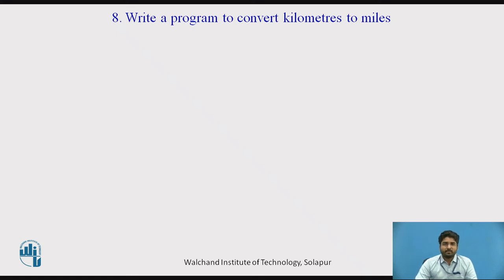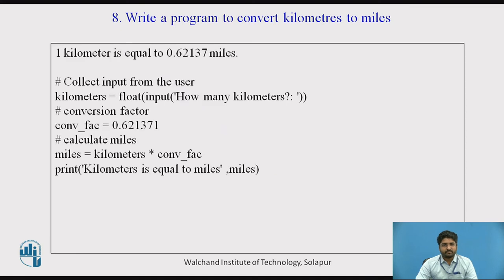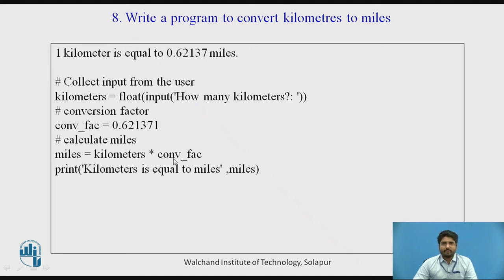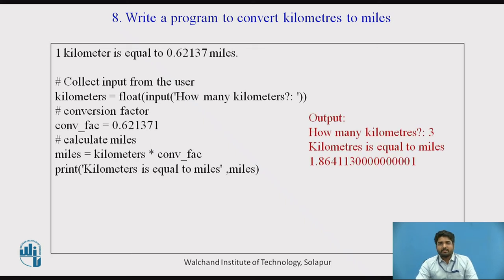Next, we will see a program to convert kilometers to miles. Here we need to know that 1 kilometer equals 0.62137 miles. We take input from the user — how many kilometers to convert. Then the conversion factor is 0.62. The calculation is miles = kilometers × conversion factor. The final output shows 'kilometers = miles', calling the miles variable. If the user enters 3, the output would be 1.8641.